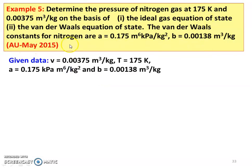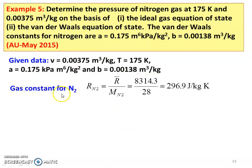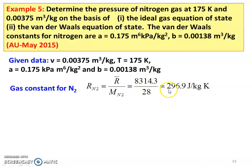Write down the given data: specific volume is 0.00375 meter cube per kilogram, temperature is 175 Kelvin, and constants A and B are given. First, the gas constant for nitrogen: R equals universal gas constant R-bar divided by the molecular weight of nitrogen M_N2. Universal gas constant is 8314.3 and molecular weight of nitrogen is 28, giving R equal to 296.9 joules per kilogram Kelvin.